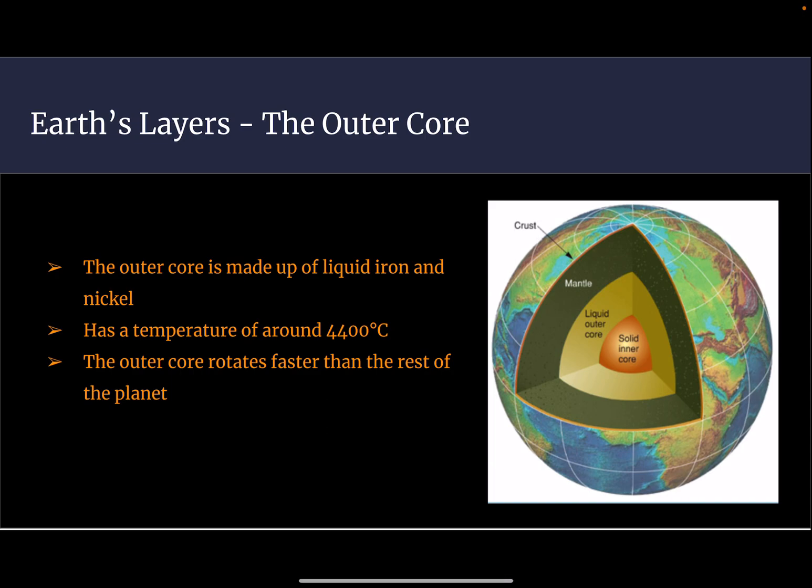The outer core is made up of liquid iron and nickel. The outer core rotates faster than the rest of the planet.